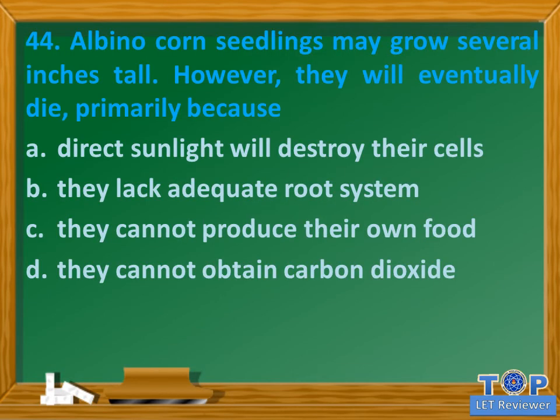Question number 44. Albino corn seedlings may grow several inches tall. However, they will eventually die, primarily because: A. Direct sunlight will destroy their cells. B. They lack adequate root system. C. They cannot produce their own food. D. They cannot obtain carbon dioxide.